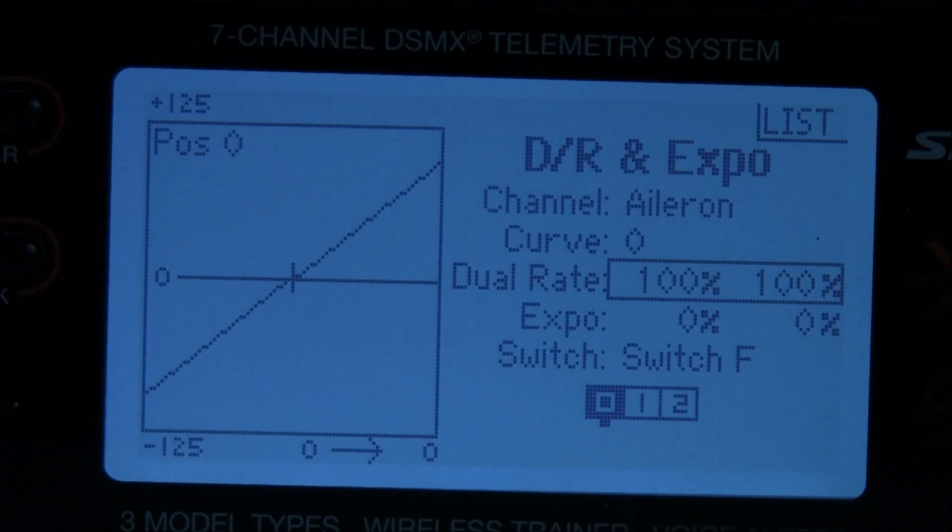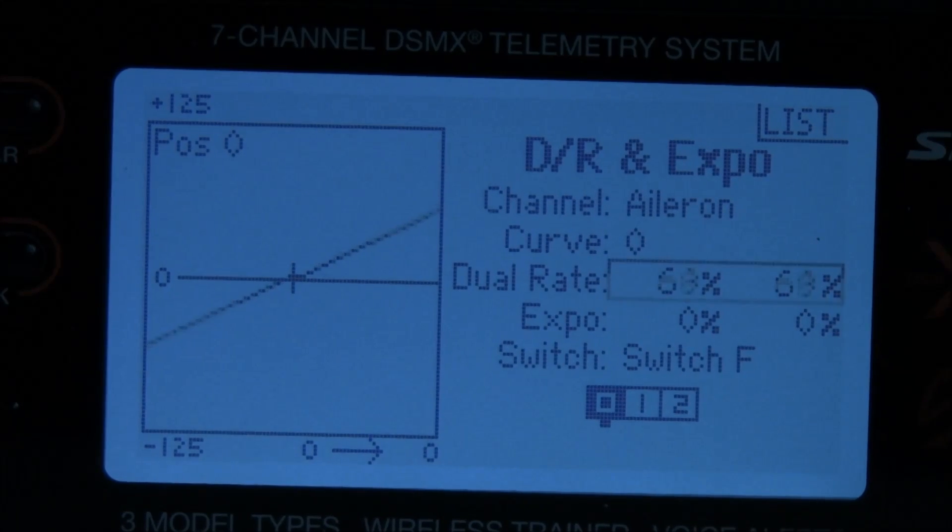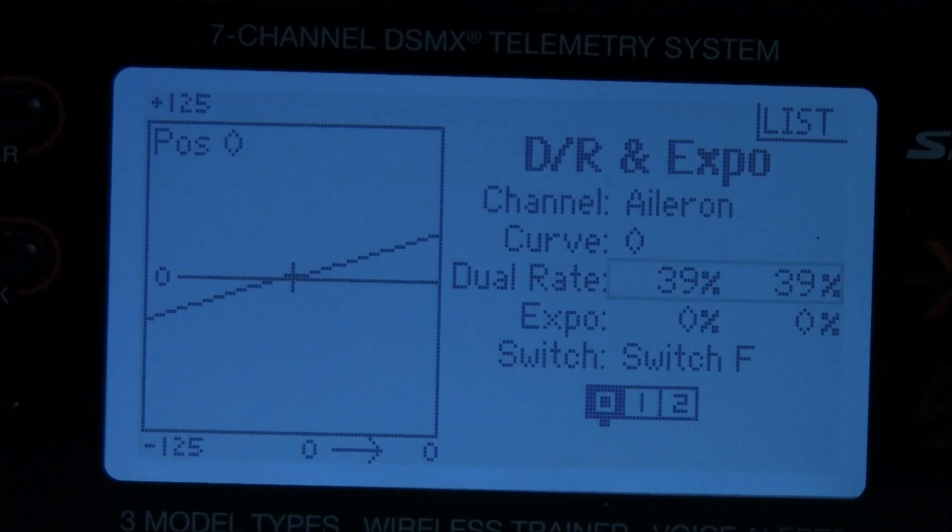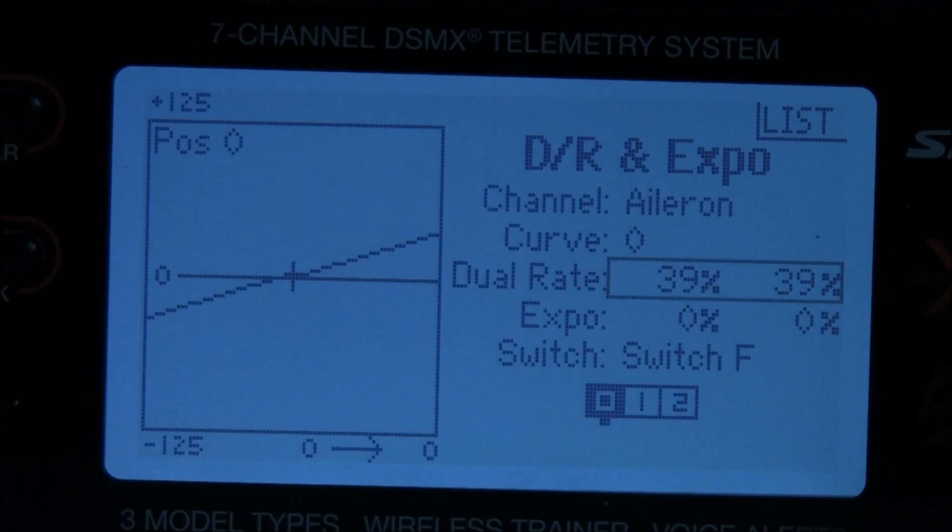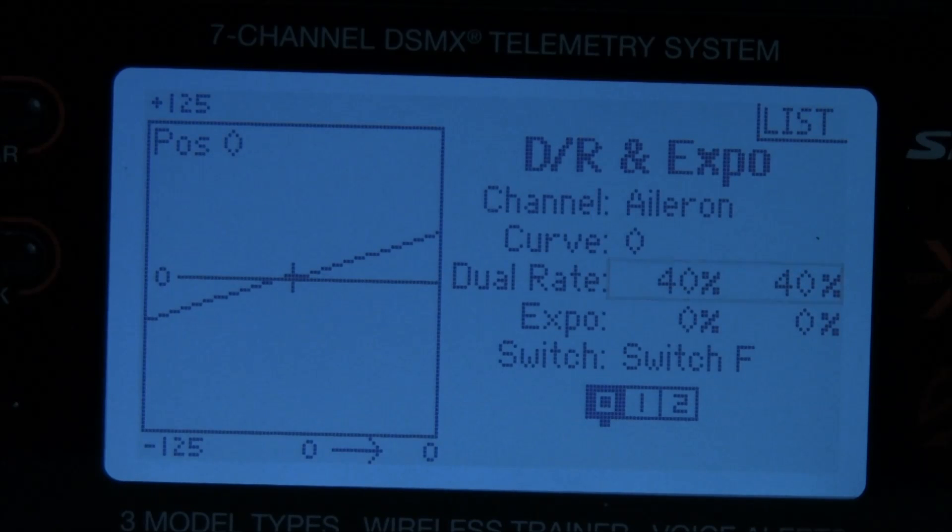Let's take that down to 40 percent. Depress the scroll switch once. Scroll down to 40. And there's 40. Depress the scroll switch once. You now have tri rates.